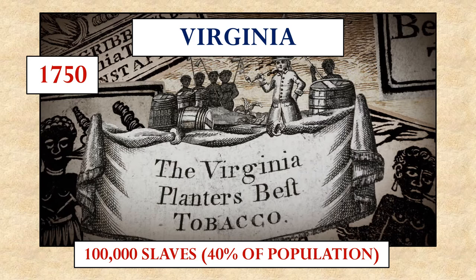Virginia was the first place where slavery took a big foothold. It was because of the production of tobacco. Tobacco was a labor-intensive agricultural product, and they required a lot of workers to plant it and harvest it. They imported slaves from Africa to do this for them. With it being the major cash crop and requiring so much slave labor, by the year 1750, there were 100,000 or more slaves living in the colony of Virginia — about 40% of the population at the time.